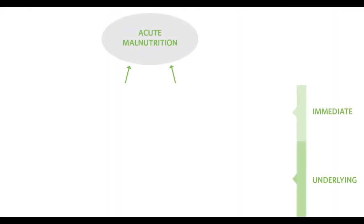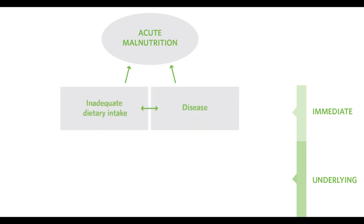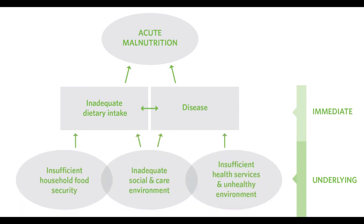There is wide agreement about the immediate and underlying causes of malnutrition that directly affect children and operate within households and communities. The immediate causes relate to inadequate dietary intake and disease, while the underlying causes relate to insufficient household food security, an inadequate social and care environment, and insufficient health services and an unhealthy environment.